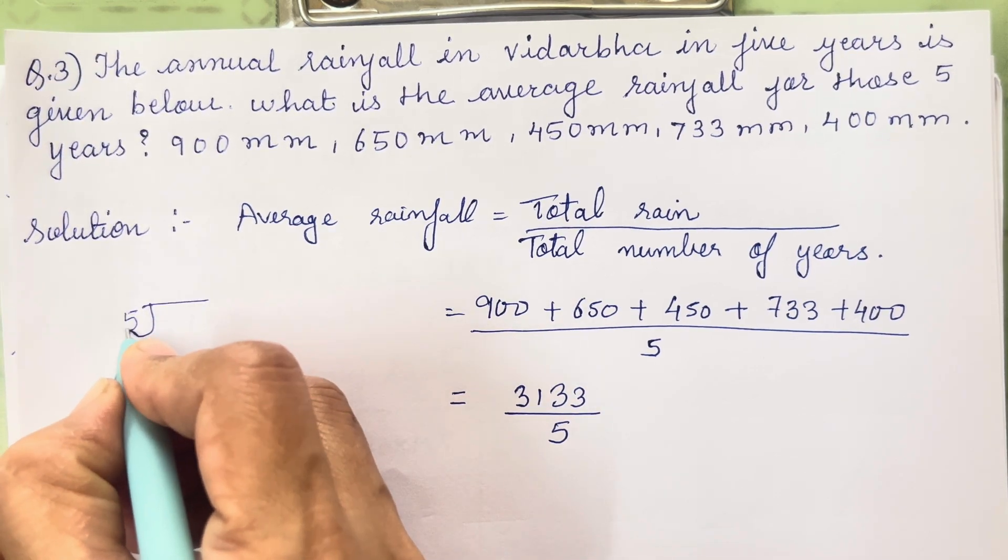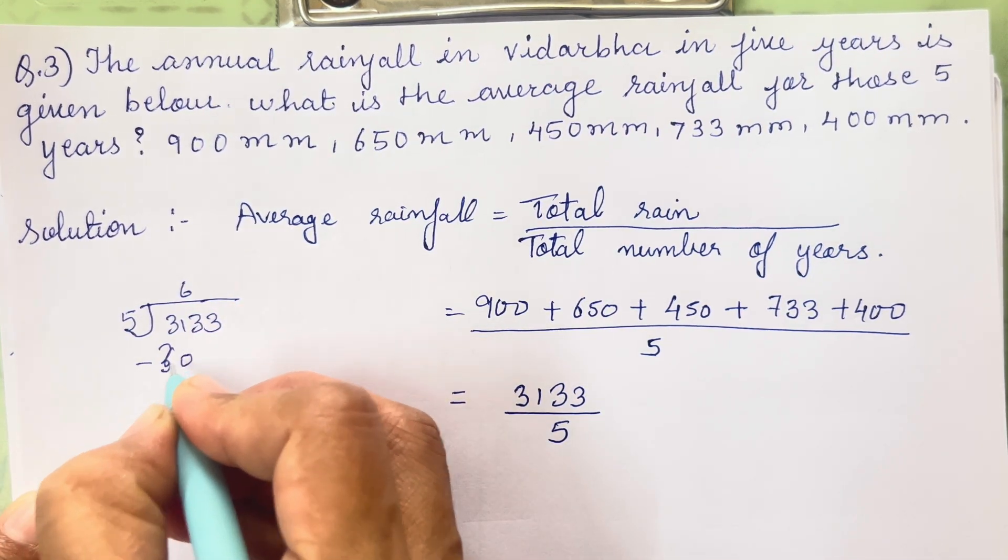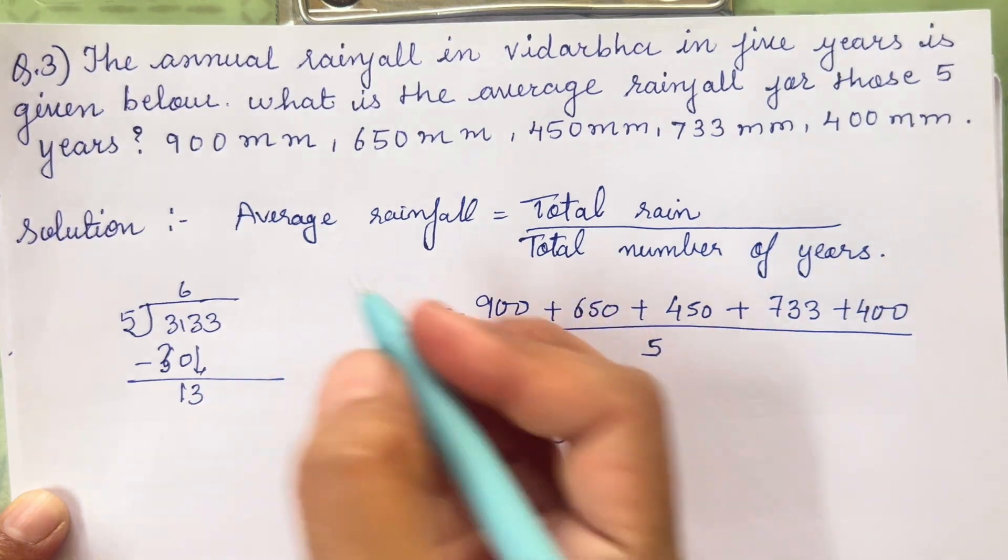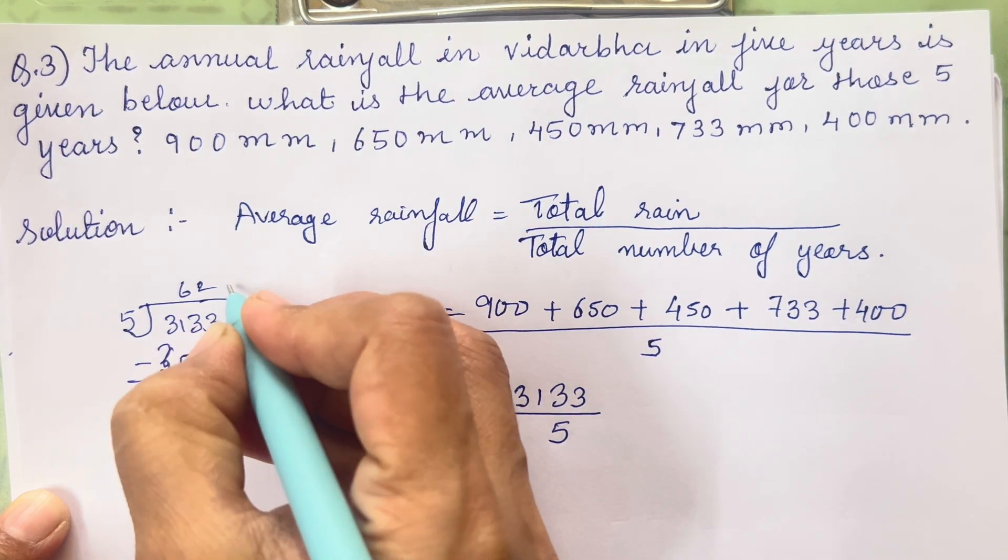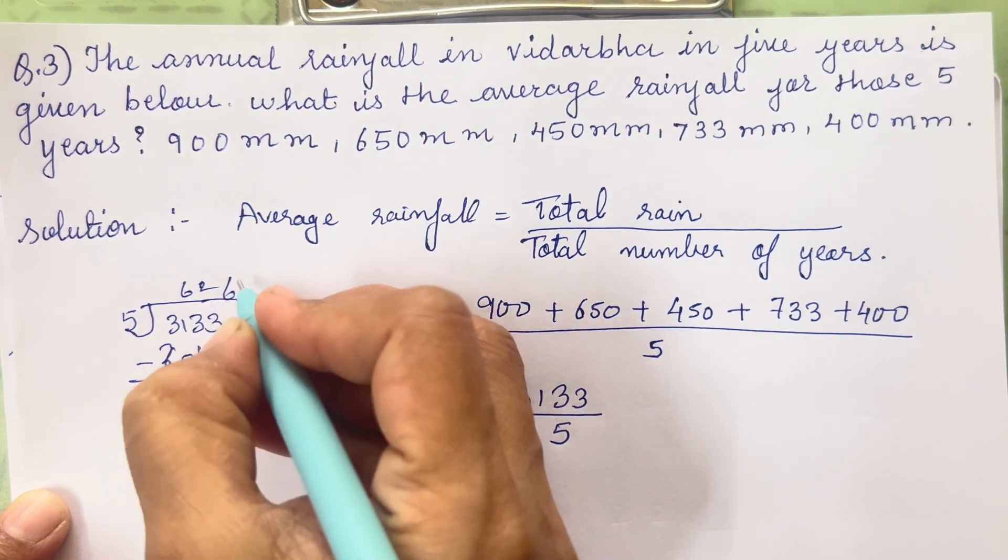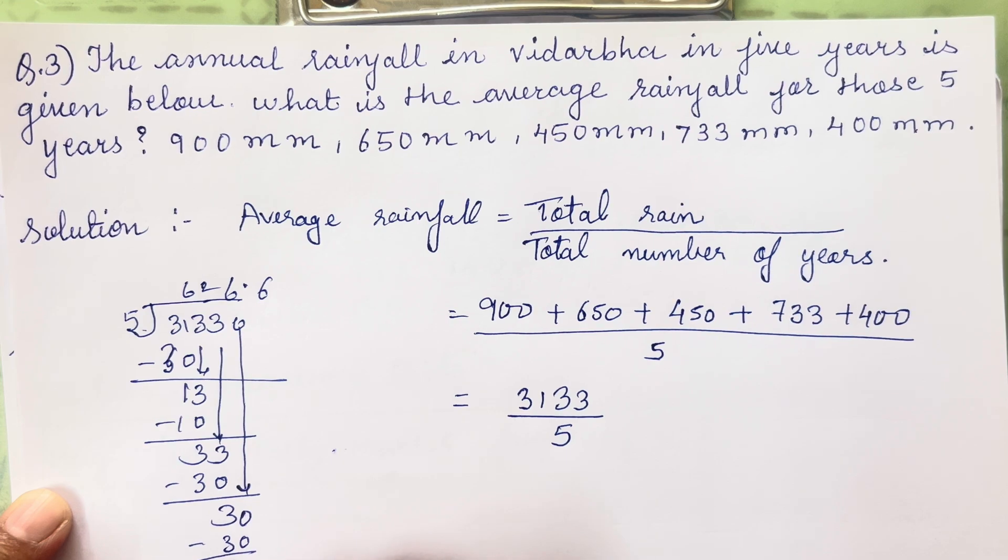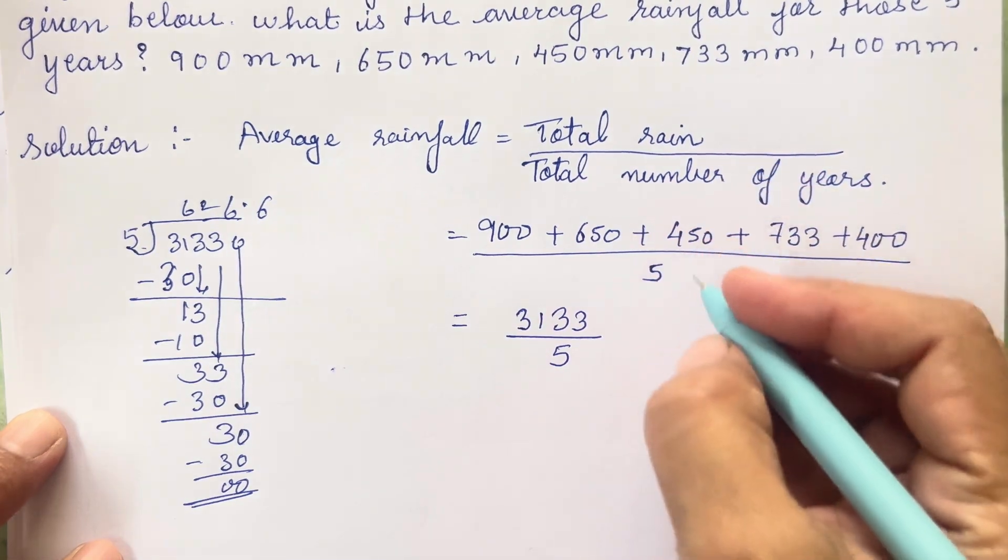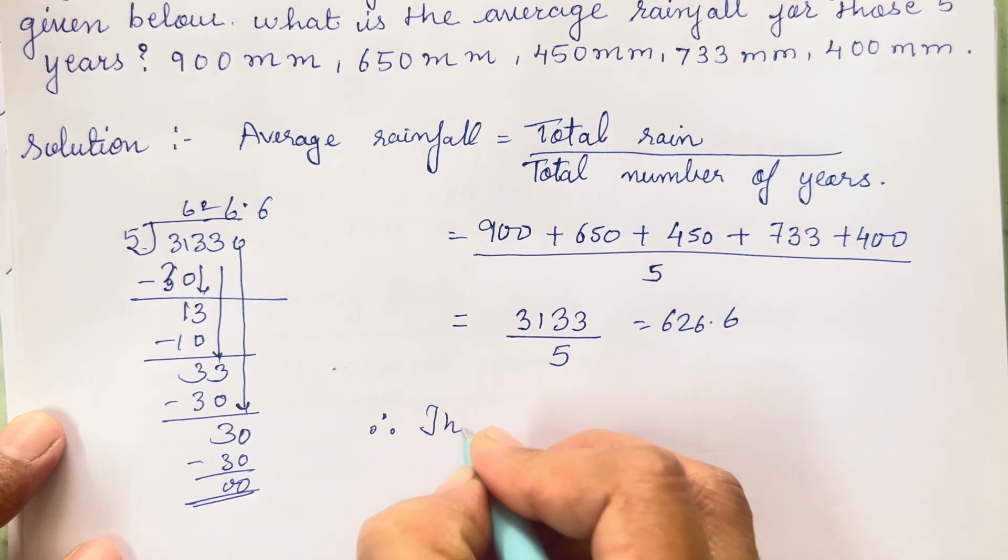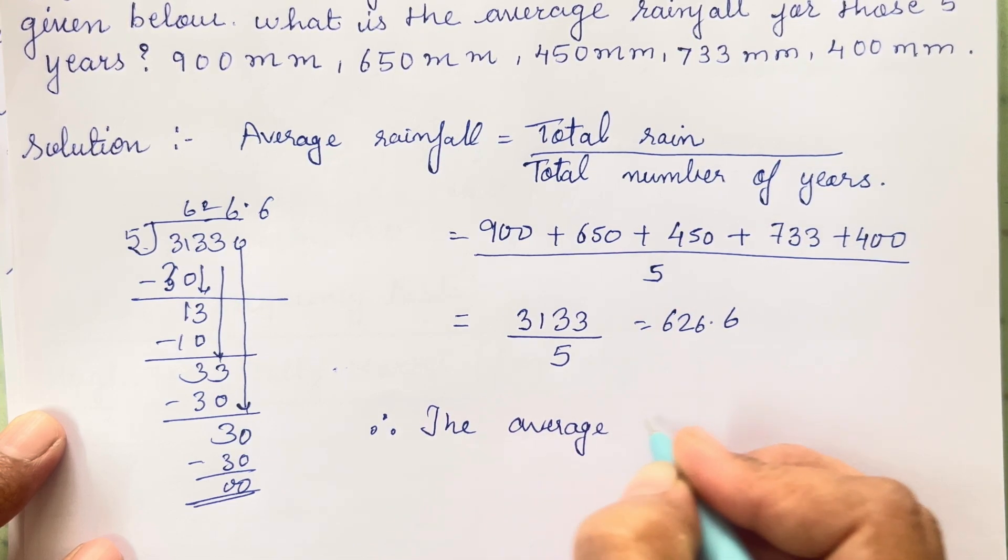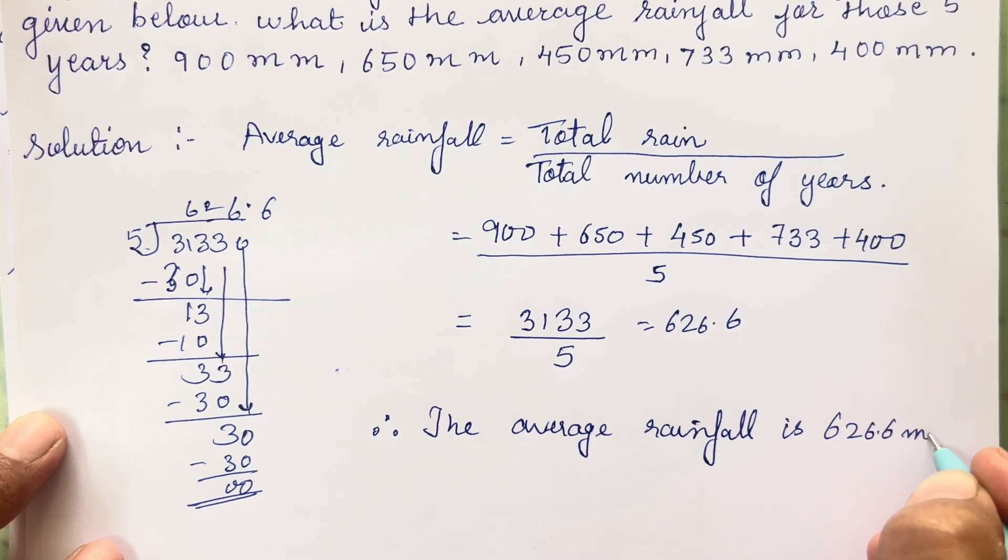Now division I will show it over here. 5 into 3133. So 5, 6 are 30. All can carry out. Now 5, 2's are 10. 5, 6 are 30. Decimal point, 5, 6 are 30. So your answer is 626.6. Therefore the average rainfall is 626.6 mm.